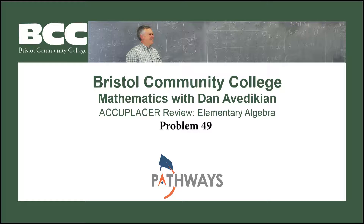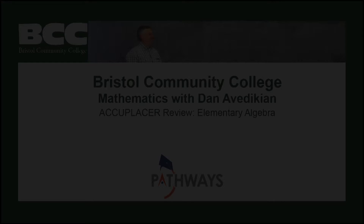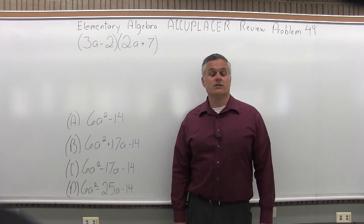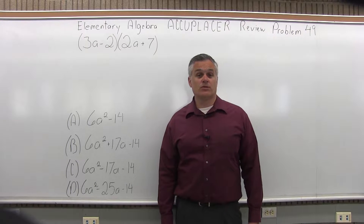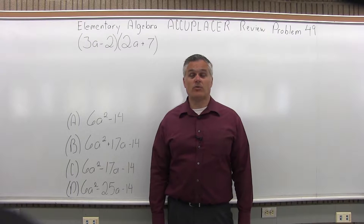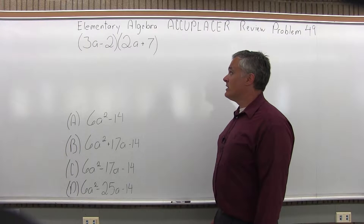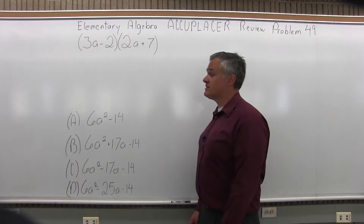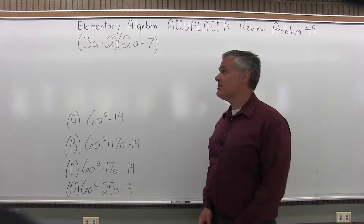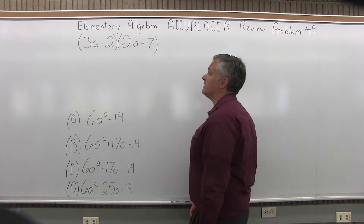Bristol Community College Mathematics with Dan Avadikian. This is the Elementary Algebra Accuplacer Review, Problem 49. We have 3a minus 2 in parentheses times 2a plus 7 in parentheses. So we have to multiply out the parentheses and combine the like terms.